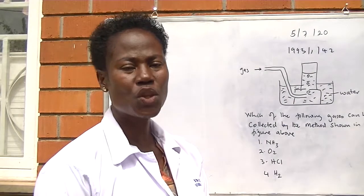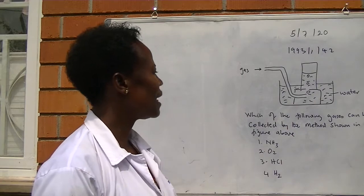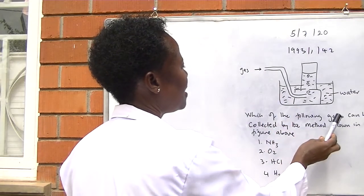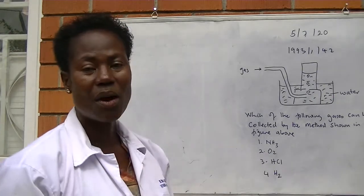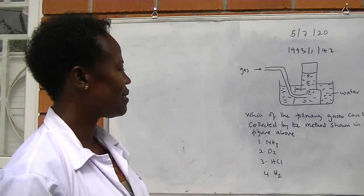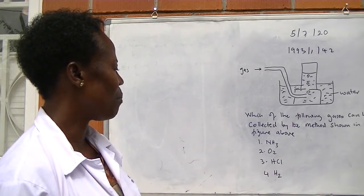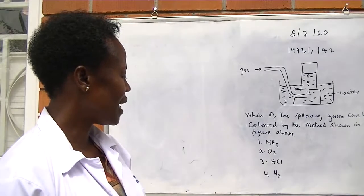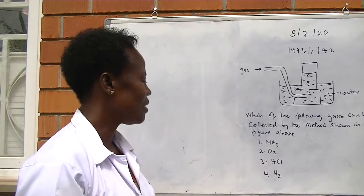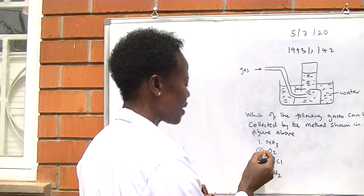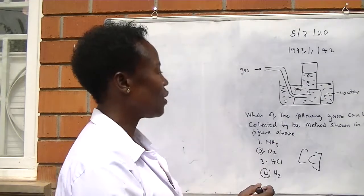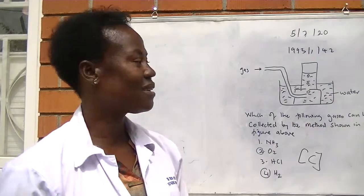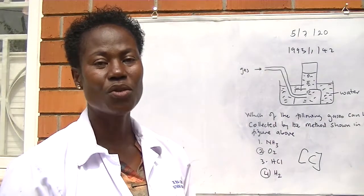1993, number 42, paper 1. We are given a setup of the apparatus. The gas is bubbled through and then water. You remember that method is by downward displacement of water. Which one of the following gases can be collected by the method shown in the figure above? Number 1, ammonia. Number 2, oxygen. Number 3, hydrogen chloride. Number 4, hydrogen. So the best answer is oxygen and hydrogen. And the answer is C. We can't collect ammonia by the above method because ammonia is soluble. Neither do we collect hydrogen chloride gas by that method because it is also soluble in water to form hydrochloric acid.